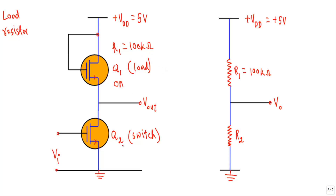We will apply the logical input at the gate terminal of transistor Q2. Since transistors Q1 and Q2 act like resistors during ON or OFF state, I can simplify this MOSFET network with an equivalent resistive network.